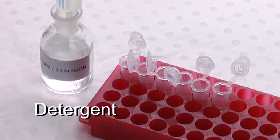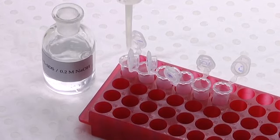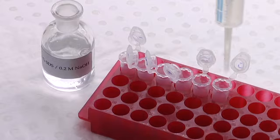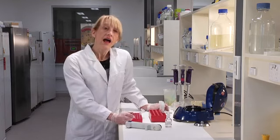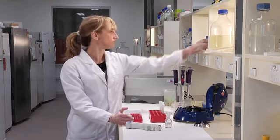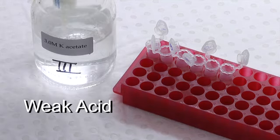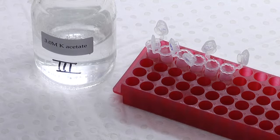And the next thing we need to do is break open the cells. And we do that using detergent at a high pH. The detergent breaks down the lipid cell wall to release the cell contents. And then we need to neutralize our solution. So we'll do that with a weak acid, like acetic acid.